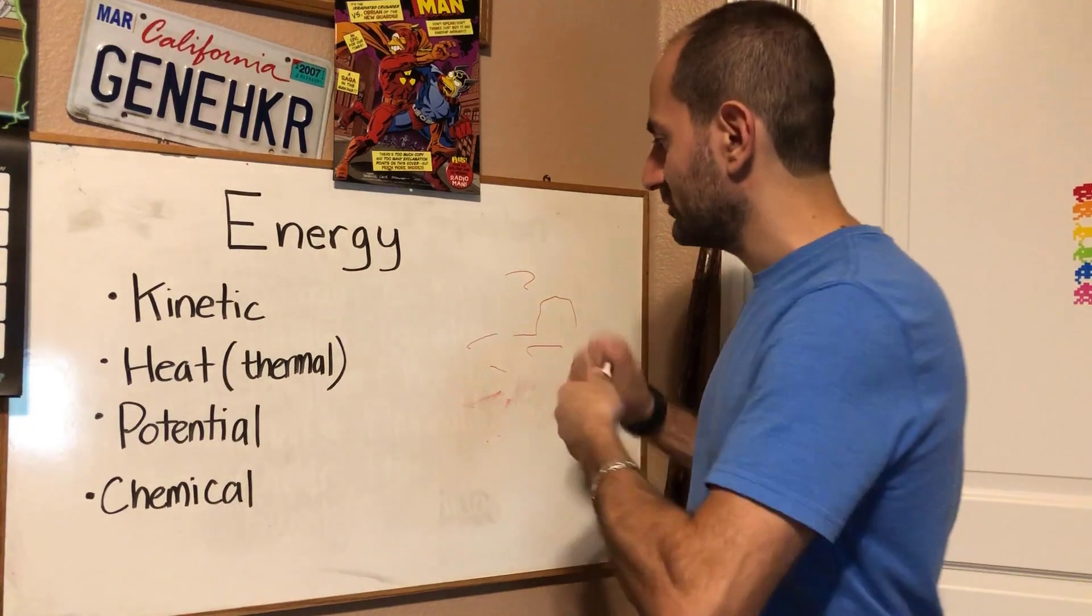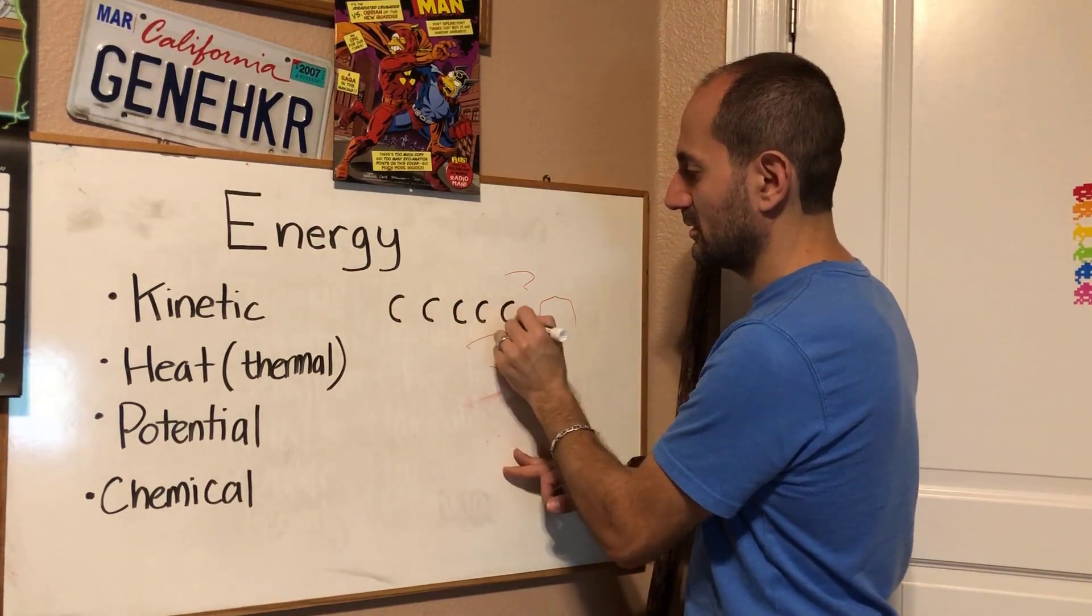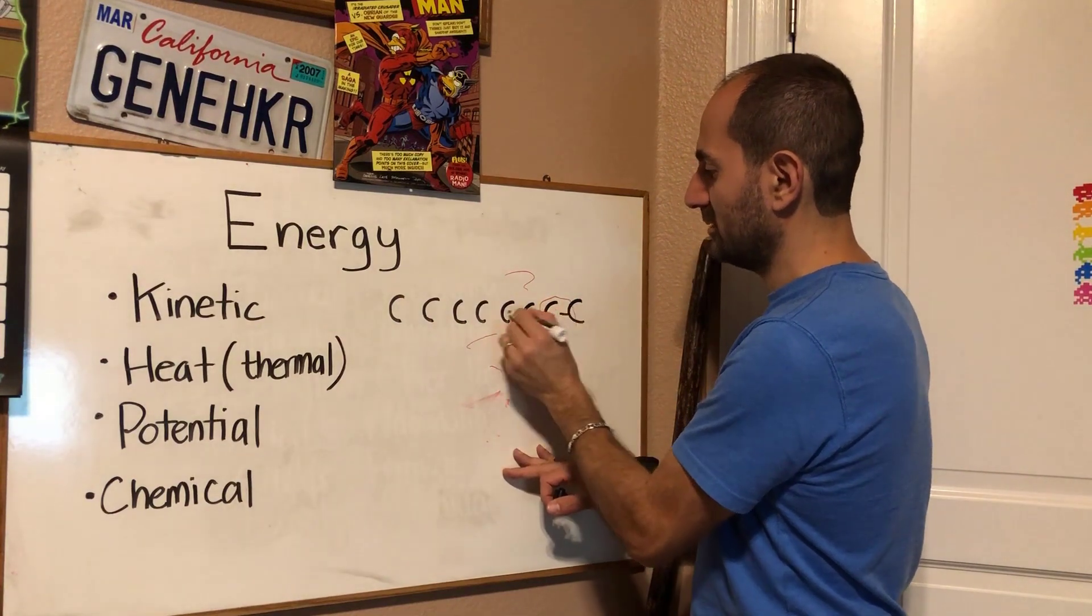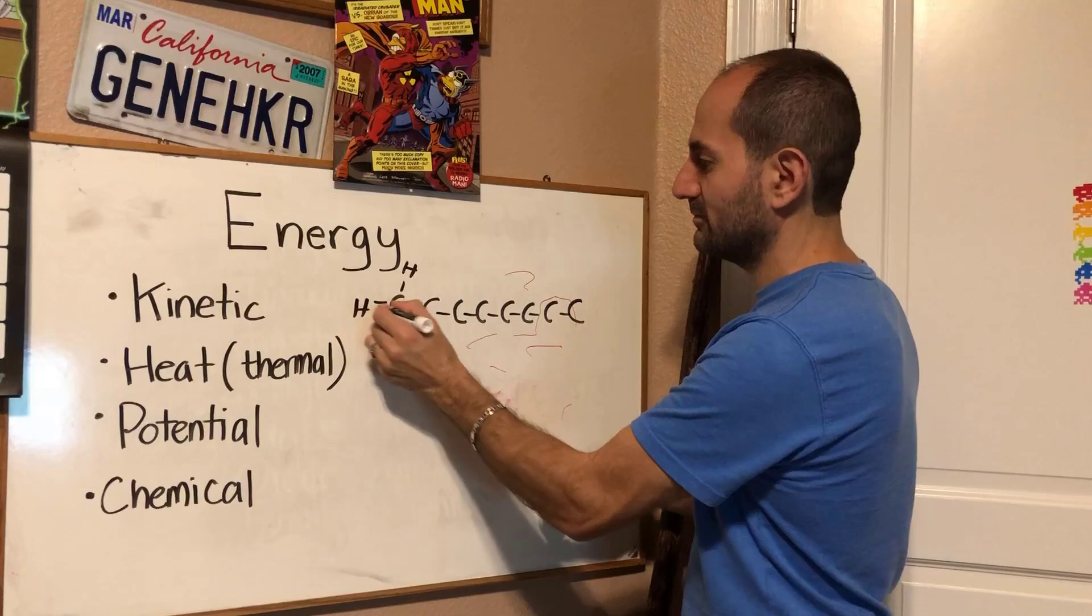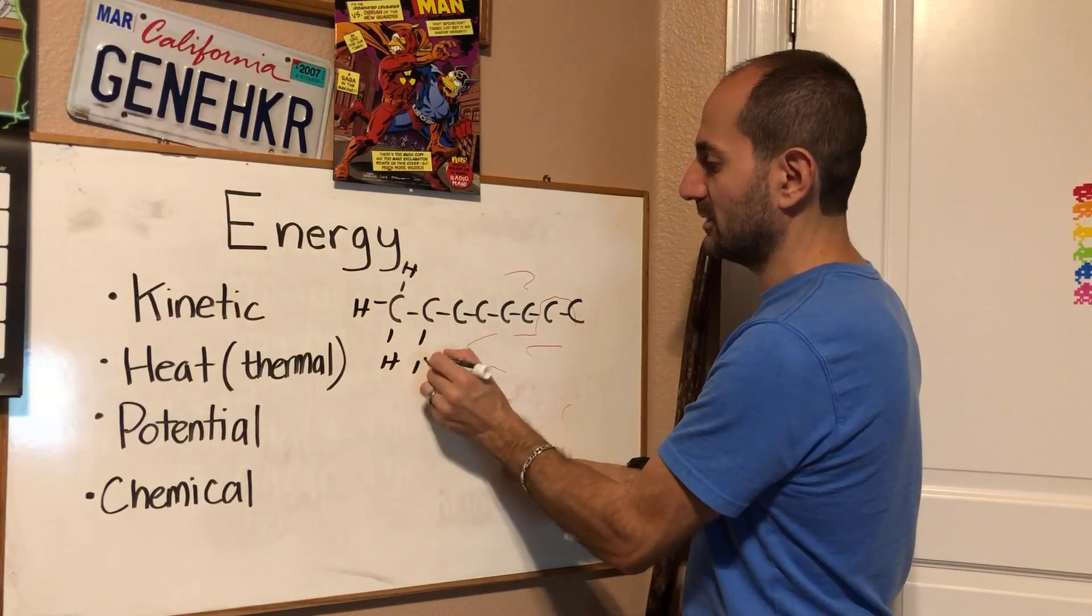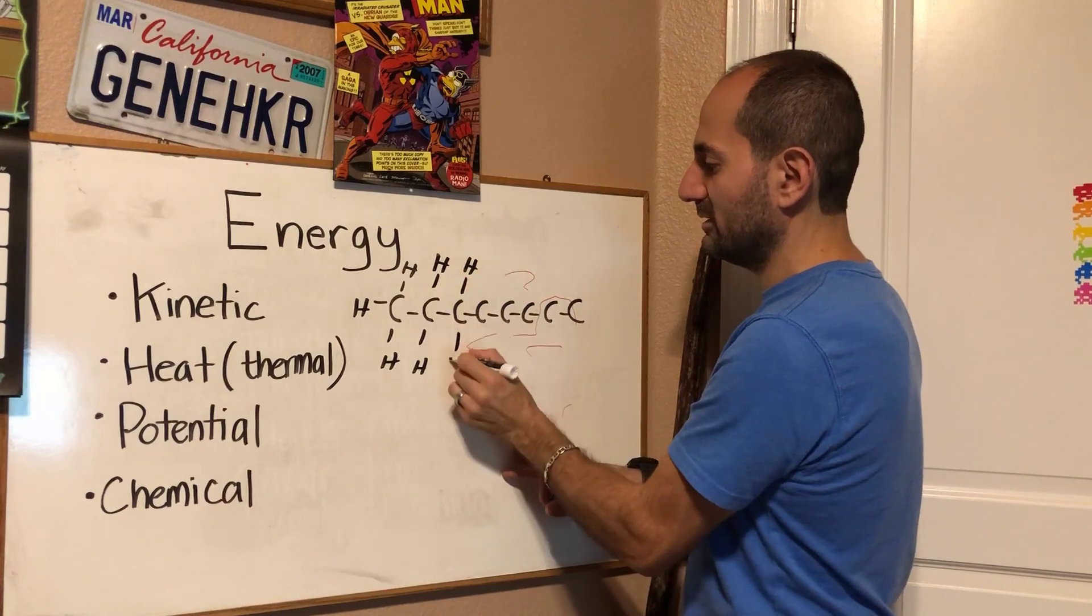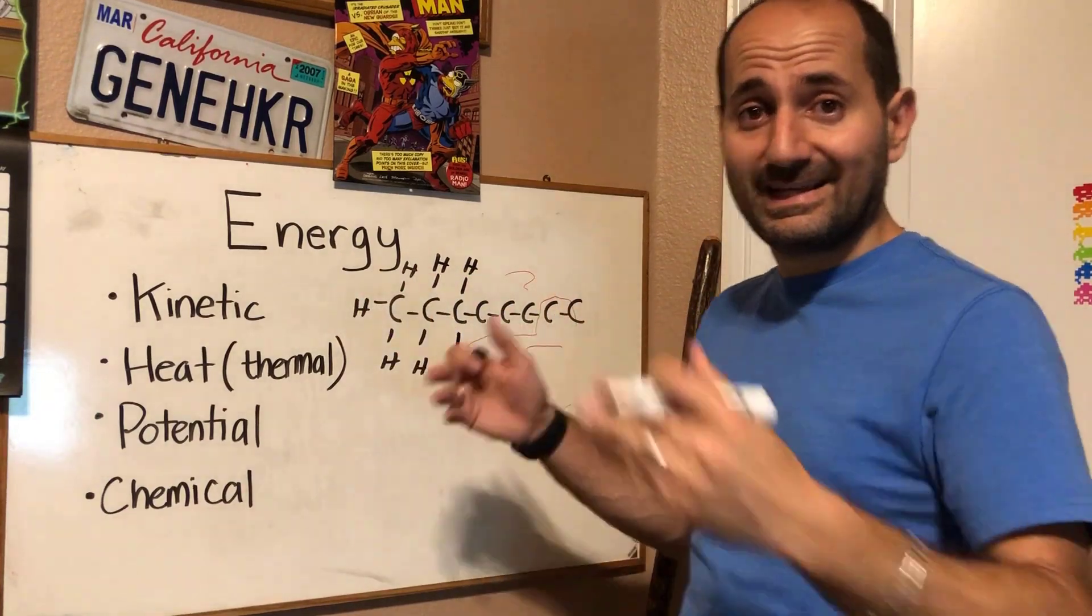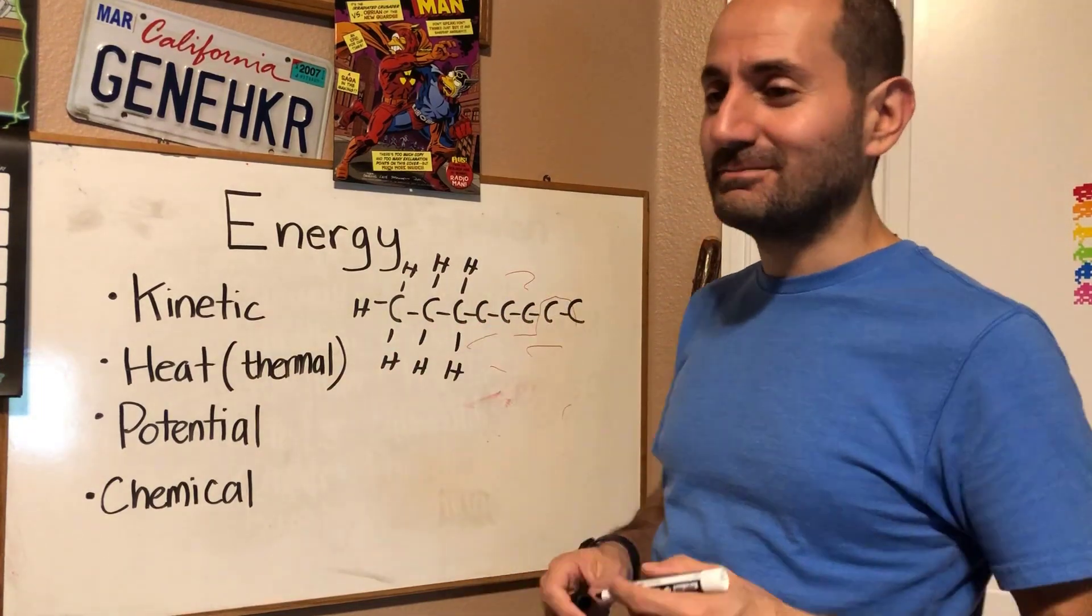So for example, octane. Octane is eight carbons in a row with hydrogens attached. I'm not going to draw all the hydrogens but you get the point. It's a hydrocarbon. It's a long hydrocarbon, eight carbons in a row with hydrogens attached to them.